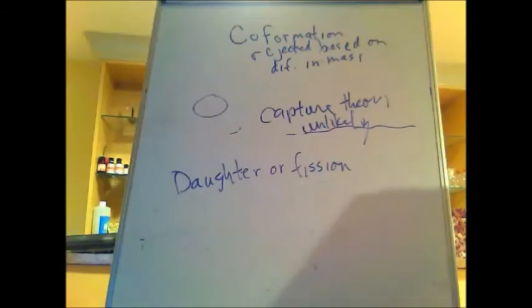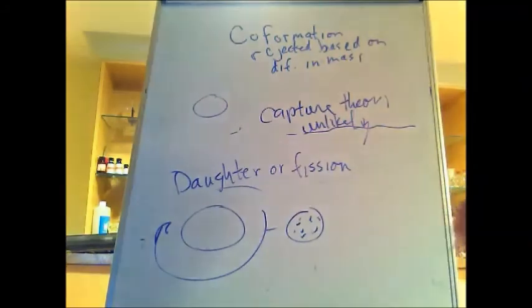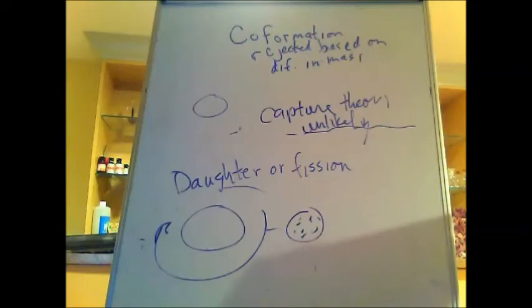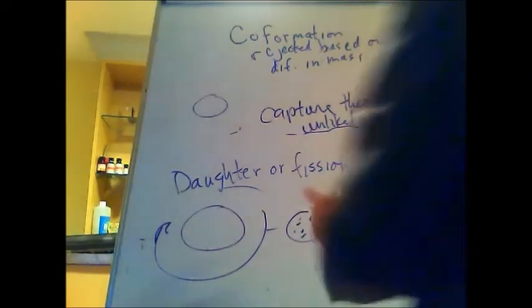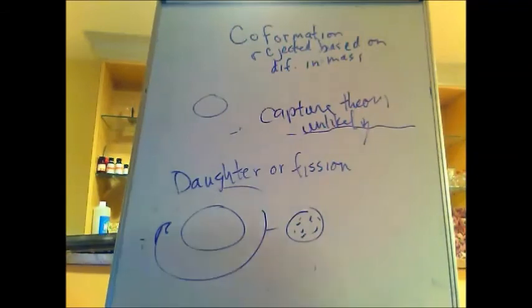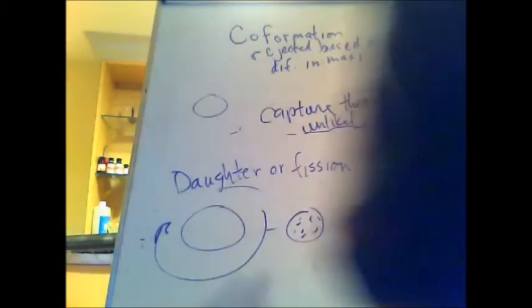Another theory is the daughter or fission theory. In this theory, before the Moon condensed into a solid object, protolunar matter was torn off from the Earth. As the Earth was still rotating rapidly and hadn't solidified, material spun off and ultimately condensed into the Moon. However, computer simulations show that the Moon would not have had a stable orbit under this scenario.